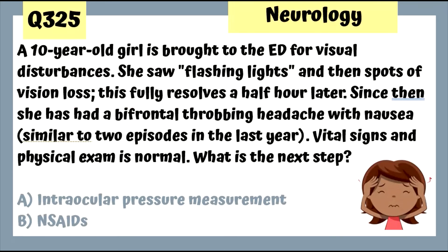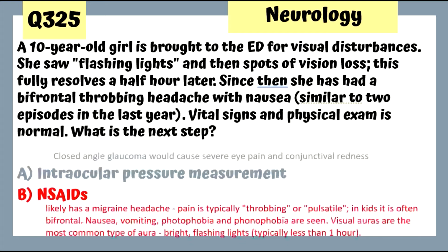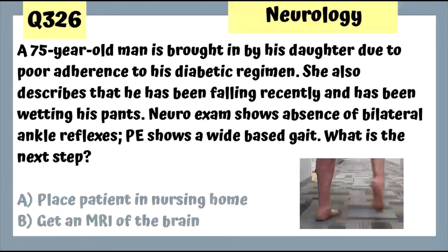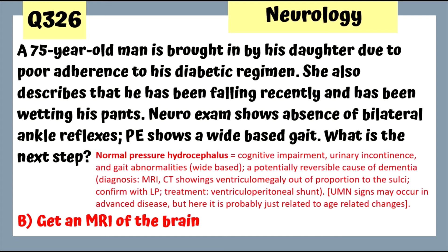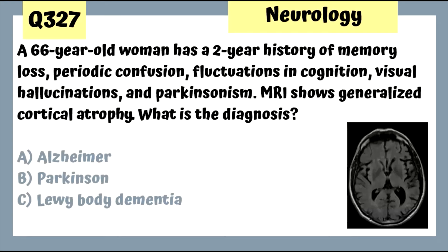Question 325: A 10-year-old girl with visual disturbances, flashing lights, then vision loss, normal physical exam — get NSAIDs because this is a migraine; in kids it's often bifrontal. Question 326: A 70-year-old man with poor diabetic adherence, recent falls, and wetting his pants — wet, wobbly, and wacky. Get an MRI of the brain for normal pressure hydrocephalus.